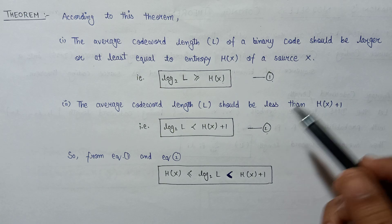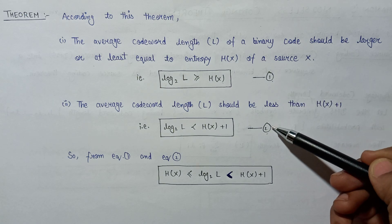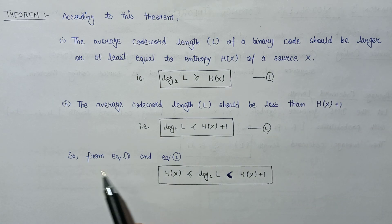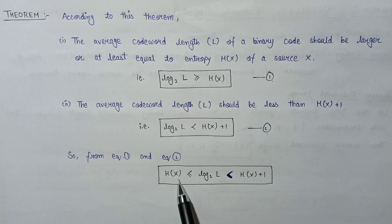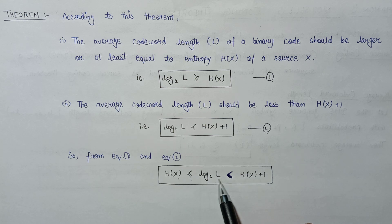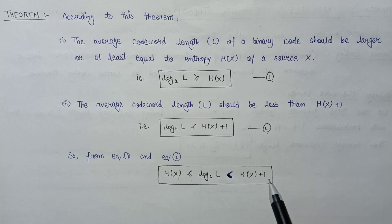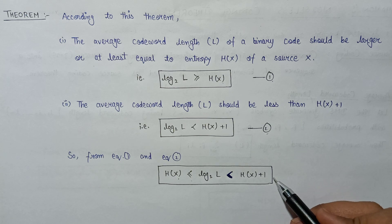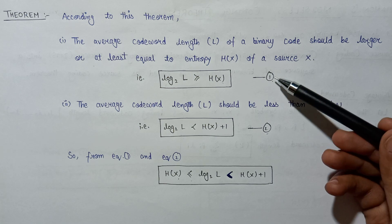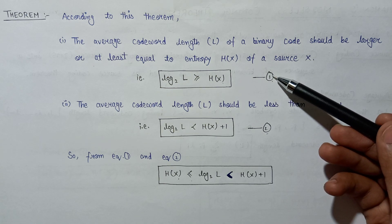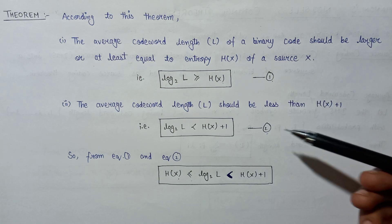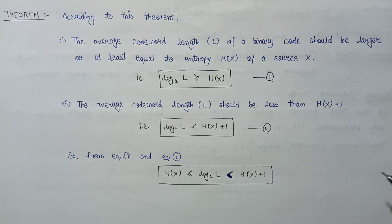Combining equation 1 and equation 2, we get the full expression of Shannon's noiseless coding theorem: H(x) ≤ log base 2 of L < H(x) + 1.